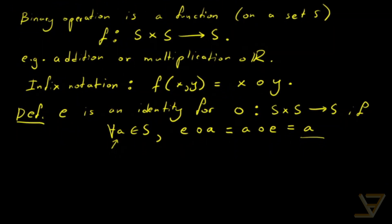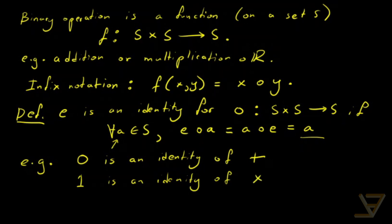Again, this might seem a little bit abstract so let's look at an example. One is that zero is an identity of addition. Another one is that one is an identity of multiplication. That's because zero plus a equals a plus zero equals a for any real number a. And one times a equals a times one equals a for any real number a.